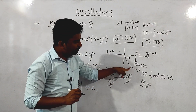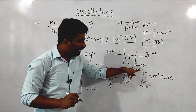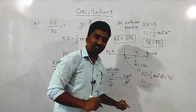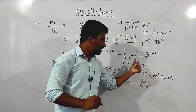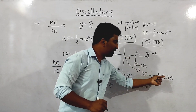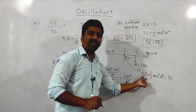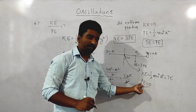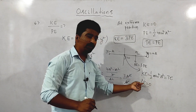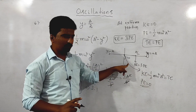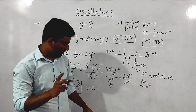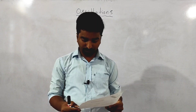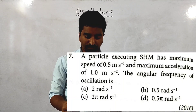At the mean position, kinetic energy is maximum, equal to the total energy. At mean position, total energy is nothing but the kinetic energy and the potential energy is 0.